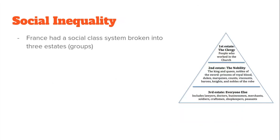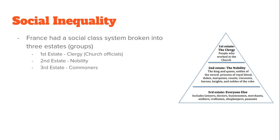Social inequality. France was split up into three different estates or groups. Number one is the clergy, making up the first estate — roughly 0.5 to 1% of the French population — made up of church officials. Next, we have the nobility, about 1% of the population — people with titles like dukes, counts, and barons — an old-school group with a tremendous amount of political control and influence in France. That leads us to the third estate, the commoners, about 98% of the population — an overwhelming majority.